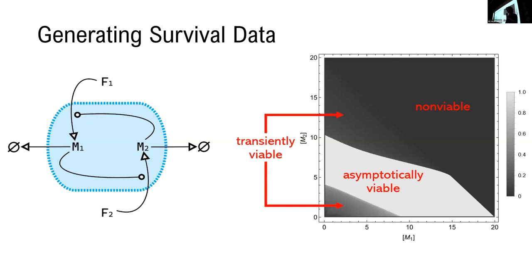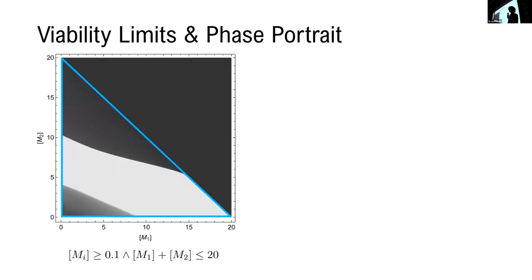So ultimately, this is what our analysis needs to be able to explain. The first thing we can do is plot the viability limits of the system, and that trivially separates the non-viable region from the initial conditions that had a positive survival score.